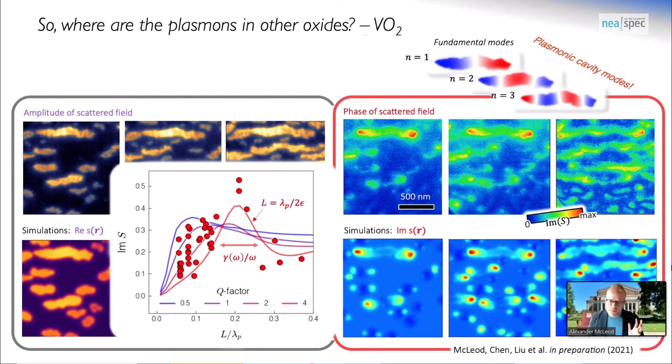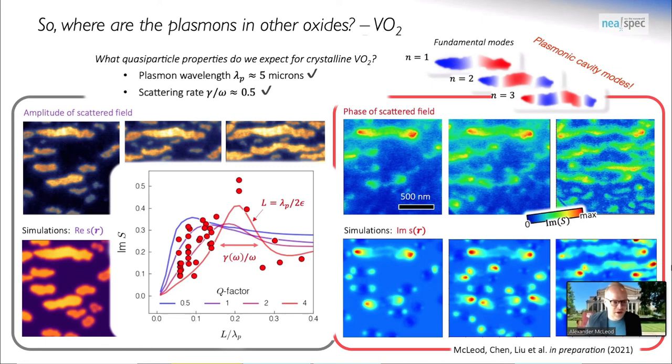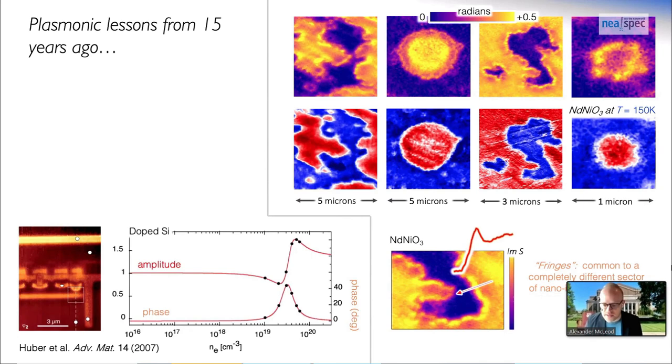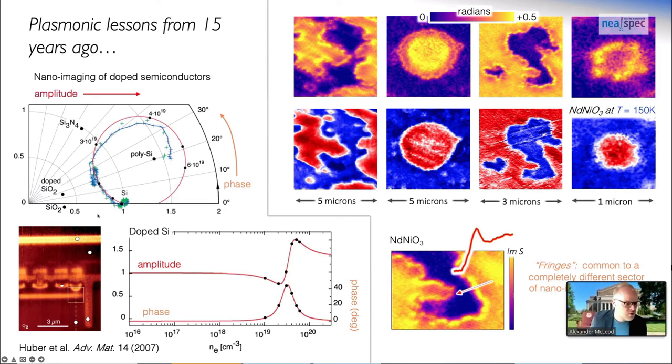What this means to say is that plasmons are alive and well inside of correlated oxides. In particular, this lesson of fringe patterns that show up in potentially plasmonic oxides is something that goes back years to, for instance, 2007 results from Andy Huber under Reiner Hillenbrand, where they investigated the plasmonic response of semiconductors. You can see a strong dependence of both the amplitude and the phase response, depicted here in this polar plot, tracing out these circular orbits. These are smoking gun signatures of plasmons, which are hiding everywhere under our nose and even in these correlated oxides.